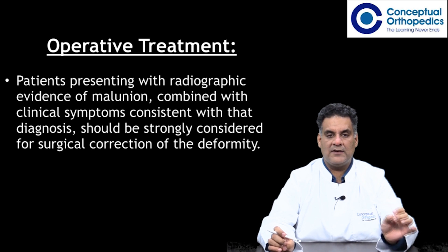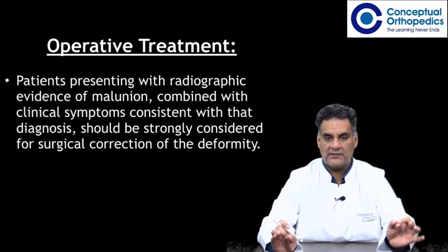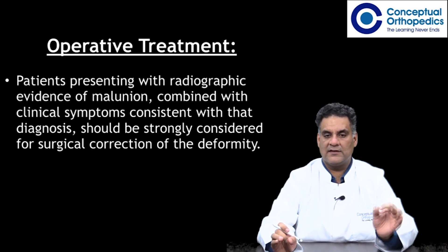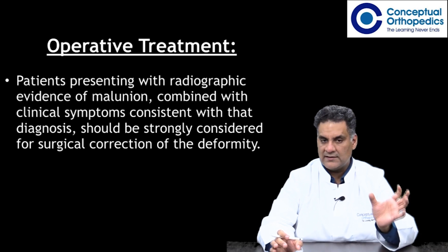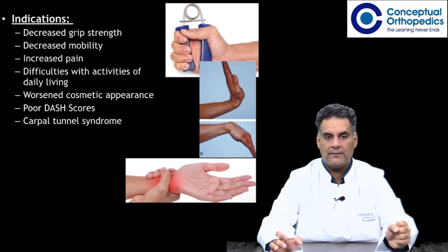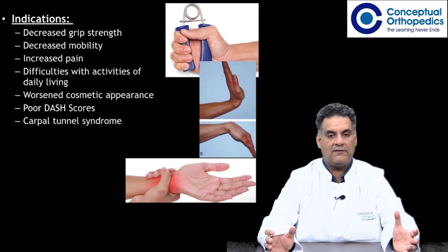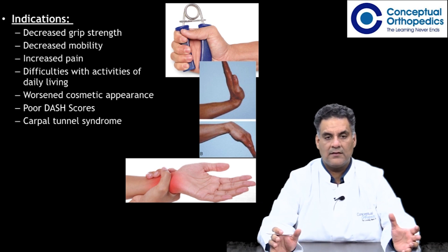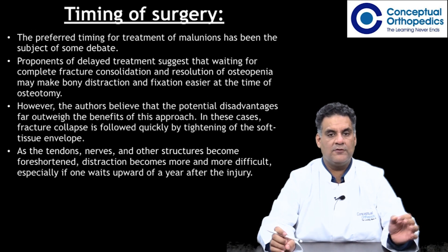For operative treatment, patients presenting with radiographic evidence of malunion combined with clinical symptoms consistent with that diagnosis should be strongly considered for surgical correction. Indications include decreased grip strength, decreased mobility, increasing pain, difficulties in activities of daily living, worsened cosmesis, a high DASH score, and carpal tunnel syndrome.